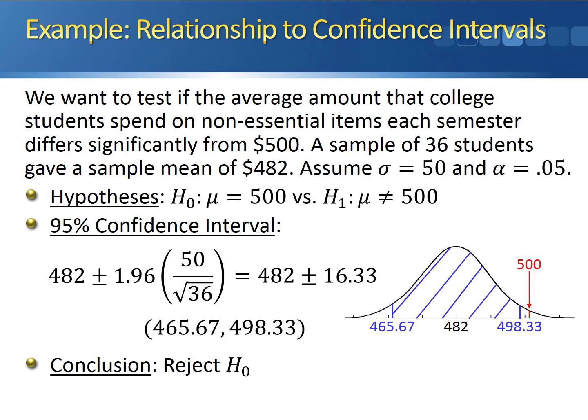As a result, we'll reject the null hypothesis because the 95% confidence interval does not contain 500, which was our hypothesized mean.